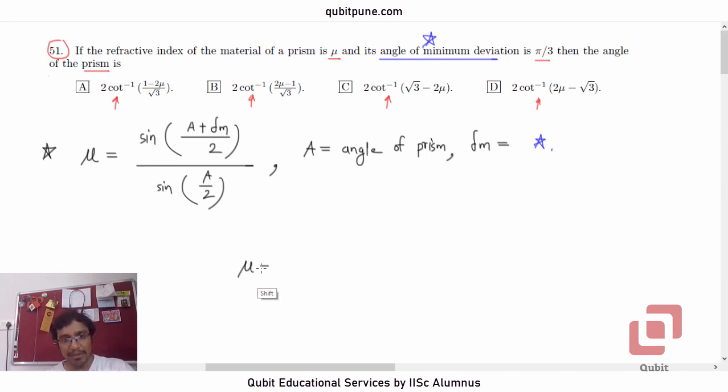So, refractive index is μ and we want our answer in terms of μ as per the options. Let us substitute the thing that is there in the problem. A/2 plus δₘ/2. Angle of minimum deviation is π/3, so δₘ is π/3.